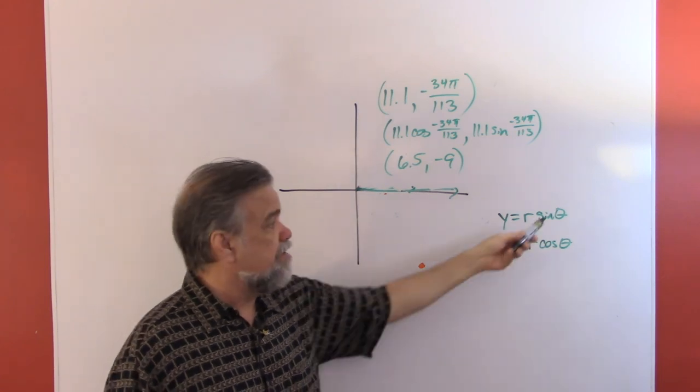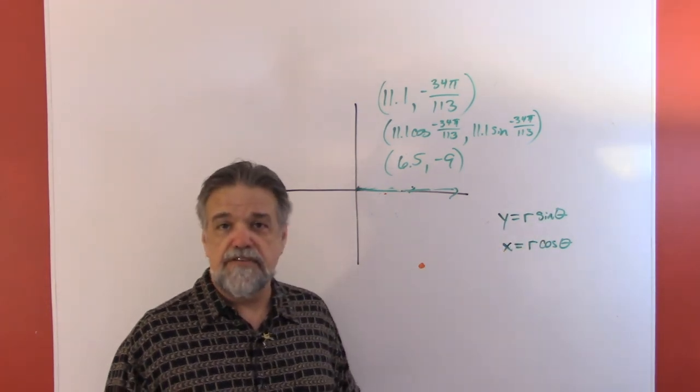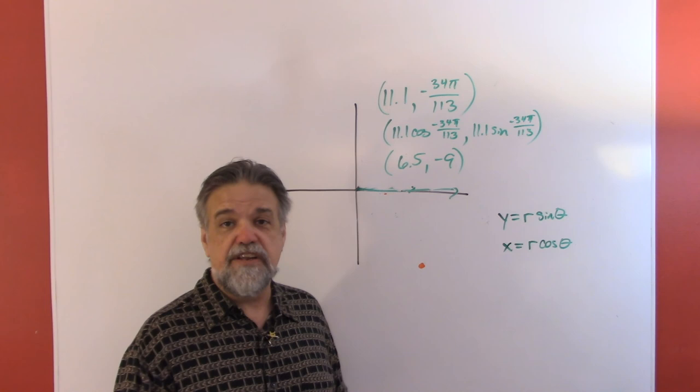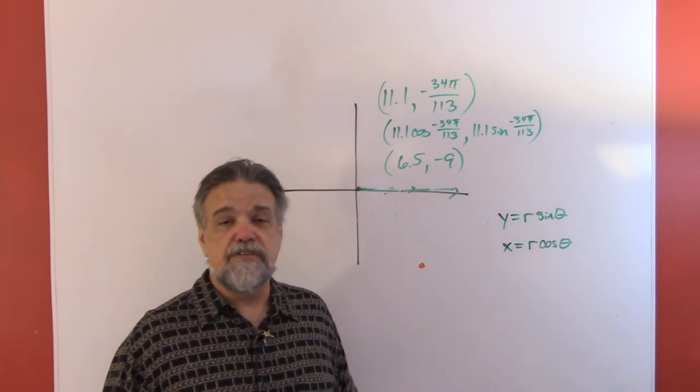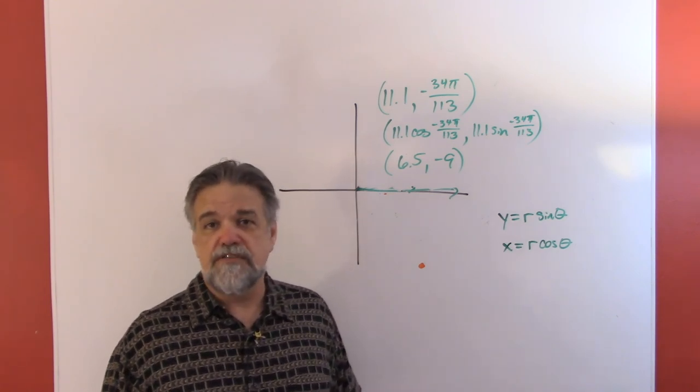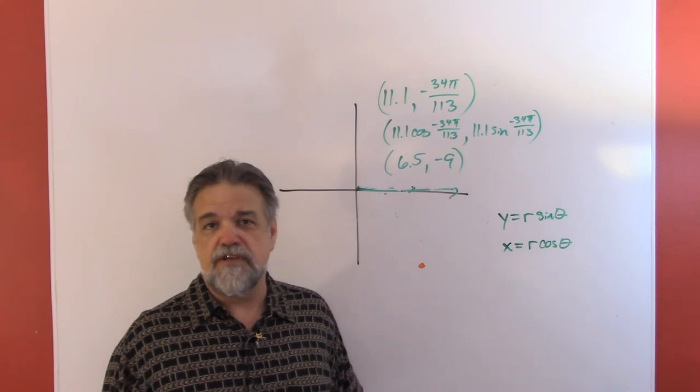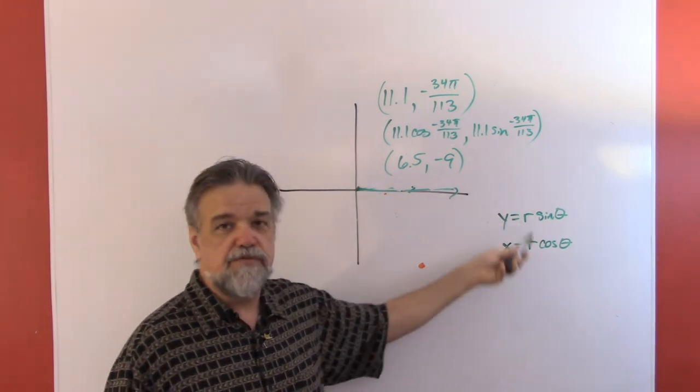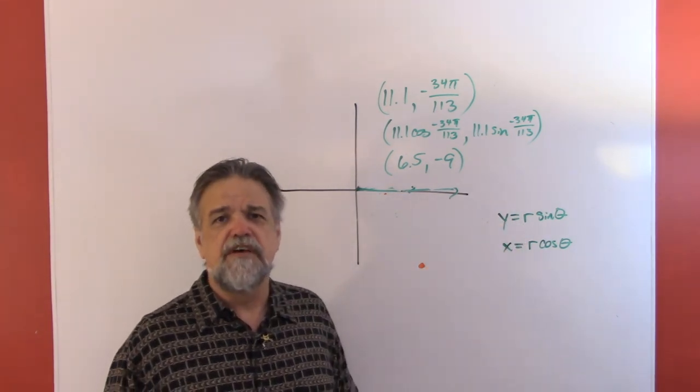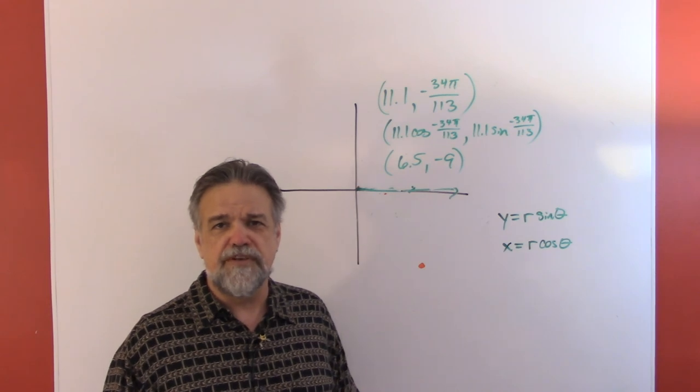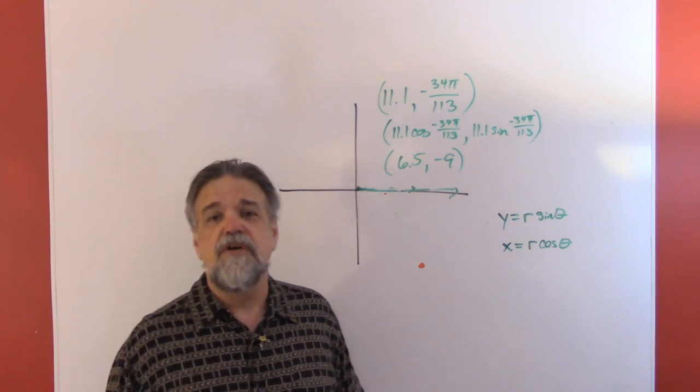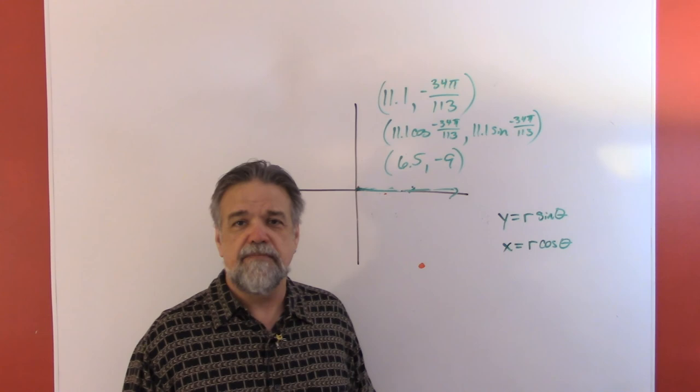It's that easy. That's all you got to do. This is going to work whether r is positive, whether r is negative, whether theta is positive, whether theta is negative, whether theta is in radians or in degrees, whether it's greater than 2π or less than 2π or greater than 360 or less than 360. This always works. So it's a really easy transition to go from polar to rectangular. In the next video, we'll go from rectangular to polar. All right, till then, bye.